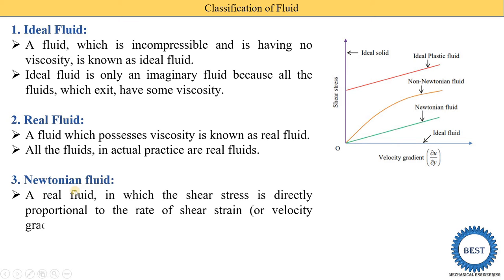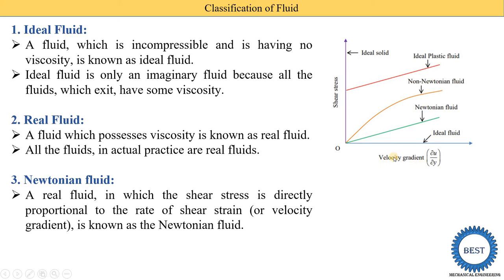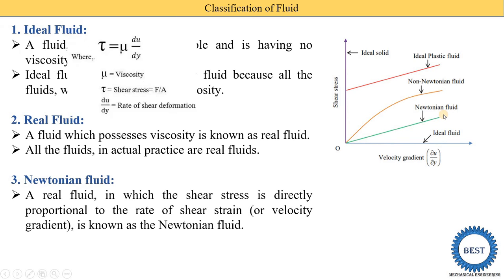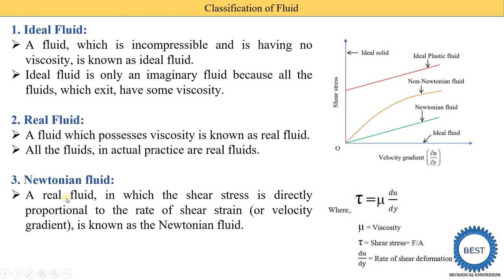Newtonian fluid is one type of real fluid. The definition of Newtonian fluid: a real fluid in which the shear stress is directly proportional to the rate of shear strain is known as Newtonian fluid. Shear strain is also called velocity gradient. In the diagram of shear stress versus rate of shear strain, shear stress and rate of shear strain being directly proportional means we draw one straight line — that is called the Newtonian fluid.